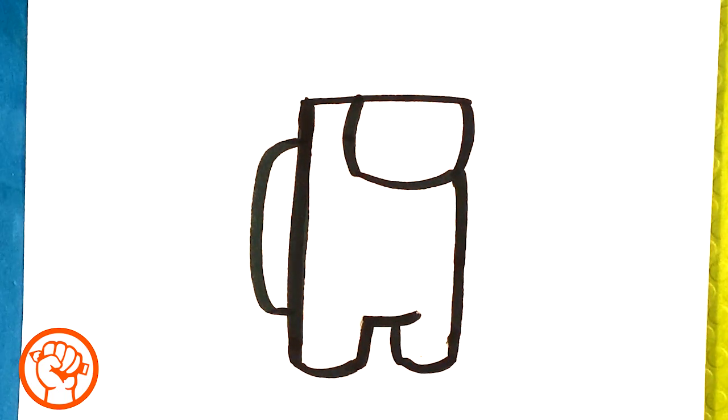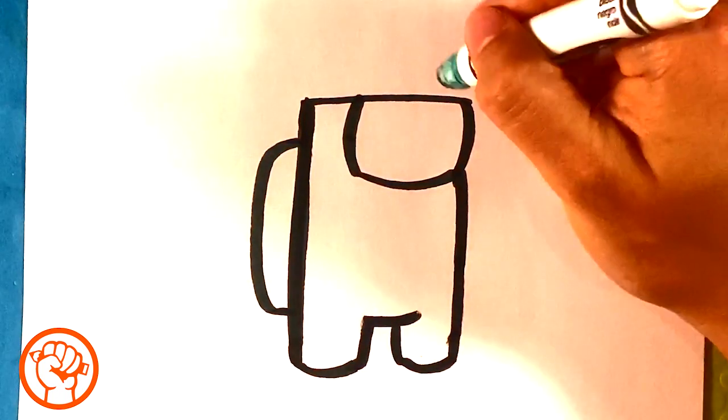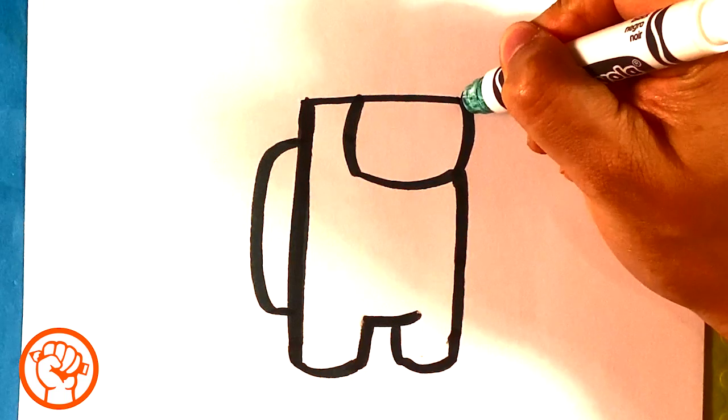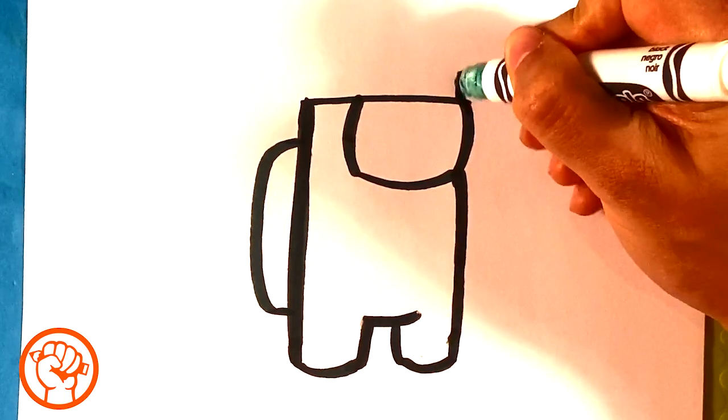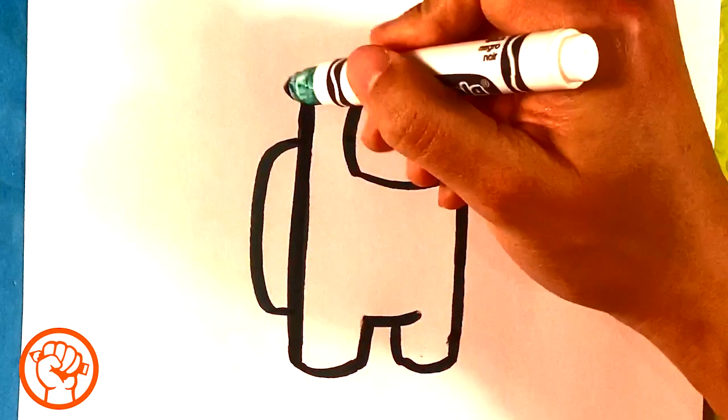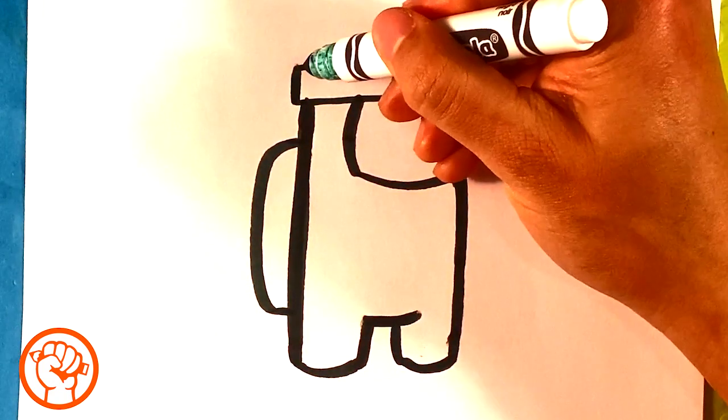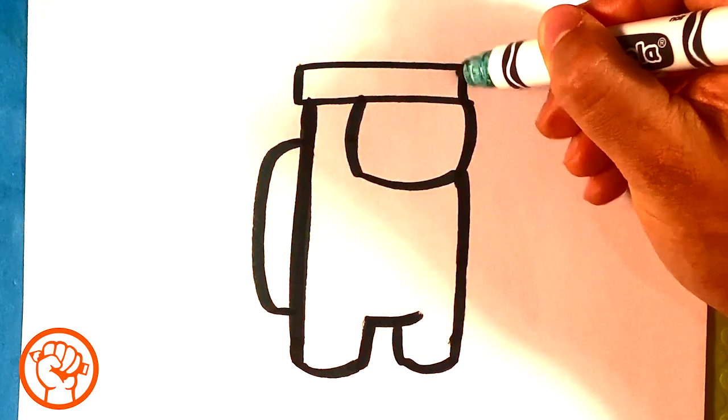Now I'm going to draw the top of the bandana. It's going to go back a little bit here and then back on the forehead here. Essentially, it's just kind of a straight line, like a thin box on his head.